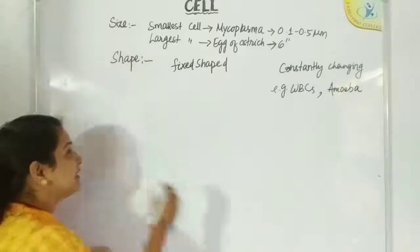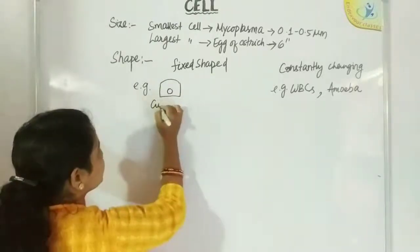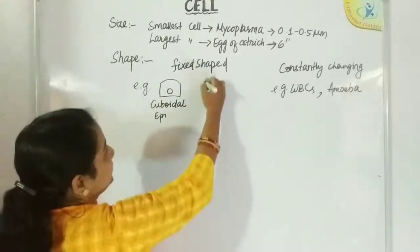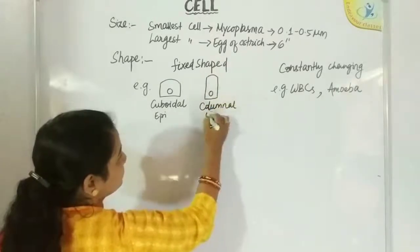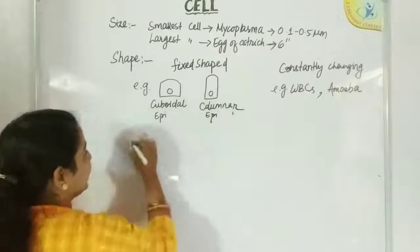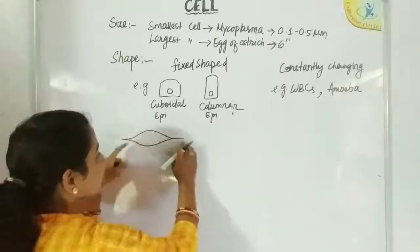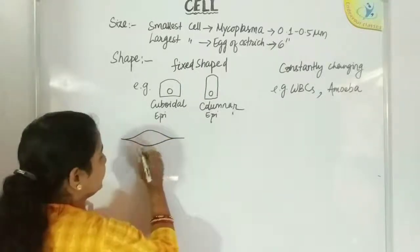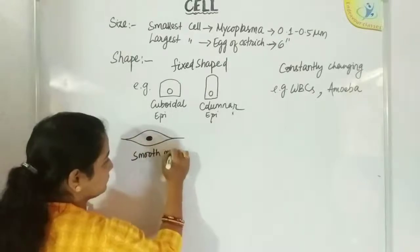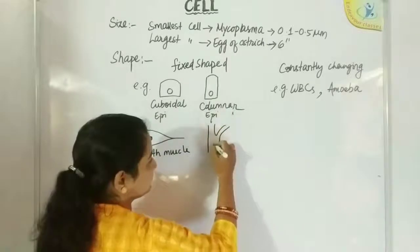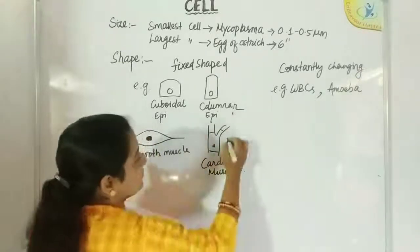Moving to fixed-shaped cells. There are many shaped cells. For example, the cubical shape, which is that of the cuboidal epithelium. Then there are column-shaped cells, that is of the columnar epithelium. Then there are spindle-shaped cells — spindle-shaped means broad in the center and narrower at the periphery, with a tail-like structure. This is the cell of smooth muscle. Next are branched cells, such as those of cardiac muscle fiber.